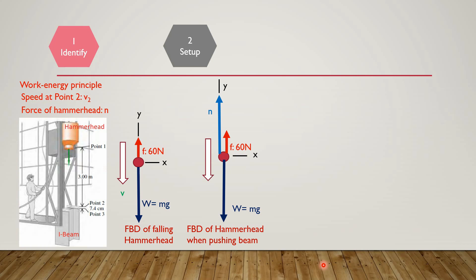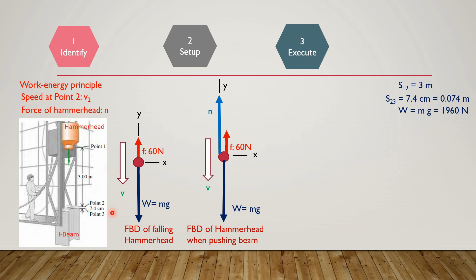The third step is to execute. We have the following data: distance between 0.1 and 0.2 is S12 = 3 meters; distance between 0.2 and 0.3 is S23 = 7.4 cm or 0.074 meters; mass of hammerhead is 200 kg, so weight is 1960 Newtons. Since the hammerhead is stationary at 0.1 and 0.3, V1 = 0 and V3 = 0. Between positions 0.1 and 0.2, we apply the work-energy principle: total work done equals change in kinetic energy.